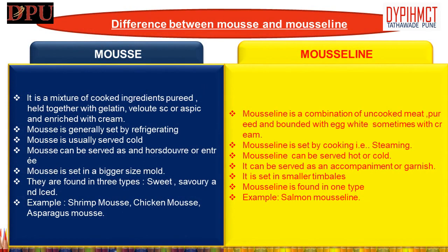Difference between mousse and mousseline: 1. A mousse is a mixture of cooked ingredients, pureed and held together with gelatin, velouté sauce or aspic enriched with cream; while mousseline is a combination of uncooked meat, pureed and bound with egg white, sometimes with cream. 2. Mousse is generally set by chilling; while mousseline is set by cooking (steaming). 3. Mousse is usually served cold; while mousseline can be served hot or cold. 4. Savory mousse can be served as hors d'oeuvre or entrée; while mousseline can be served as an accompaniment to the main course or to decorate the cold meat platter on buffet presentation. 5. Mousse is set in larger mousse molds; while mousseline is set in smaller timbales or ramekins. 6. Mousse is found in three types — savory, iced, and sweet — while mousseline is found in only one type, that is savory. 7. Examples of mousse: shrimp mousse, chicken mousse, asparagus mousse. Examples of mousseline: salmon mousseline, kingfish mousseline.